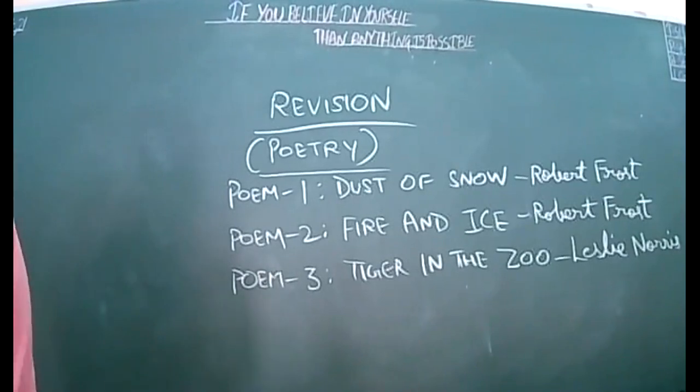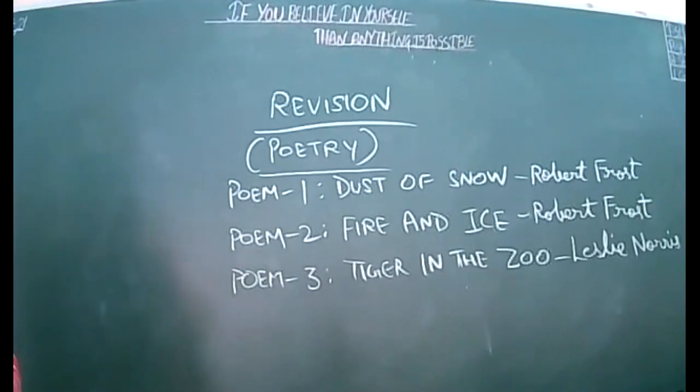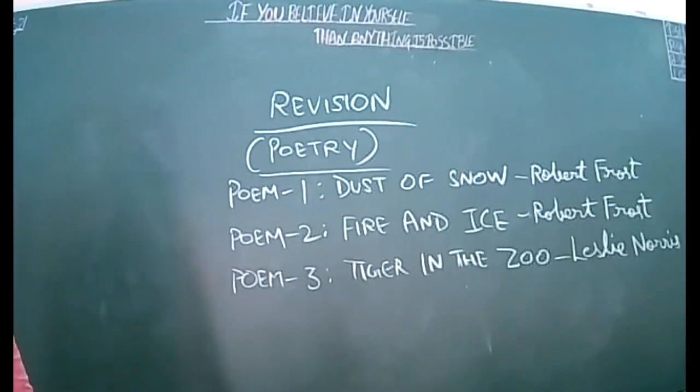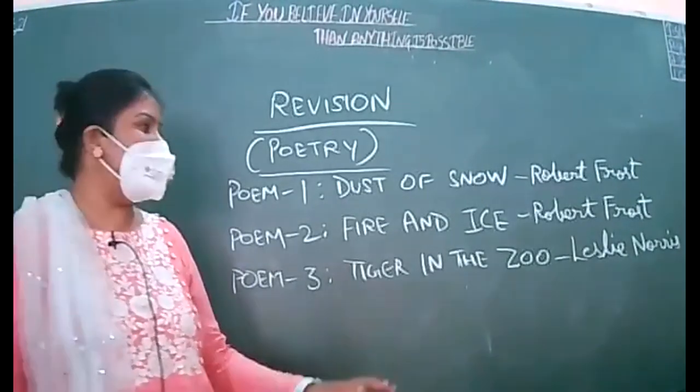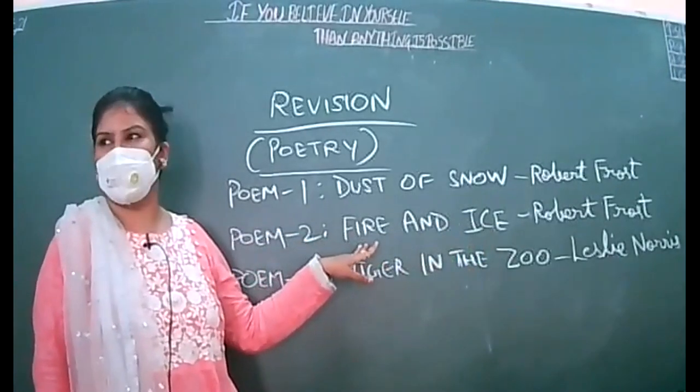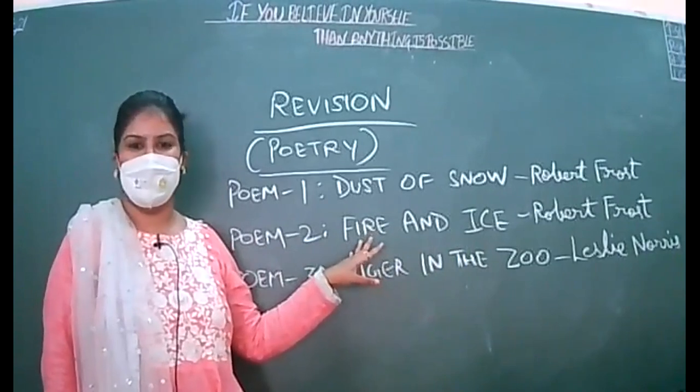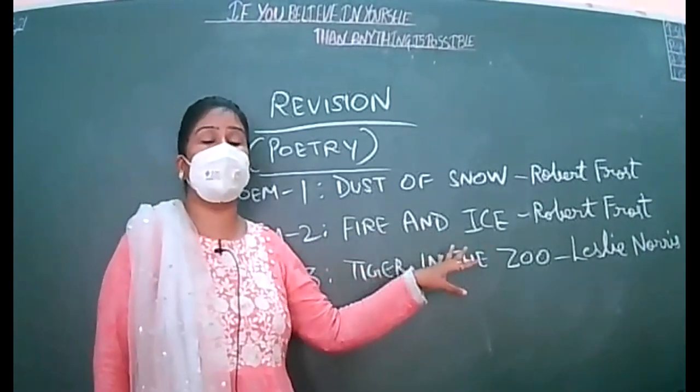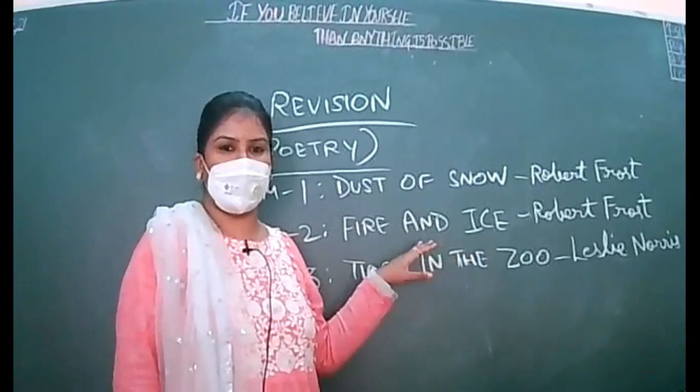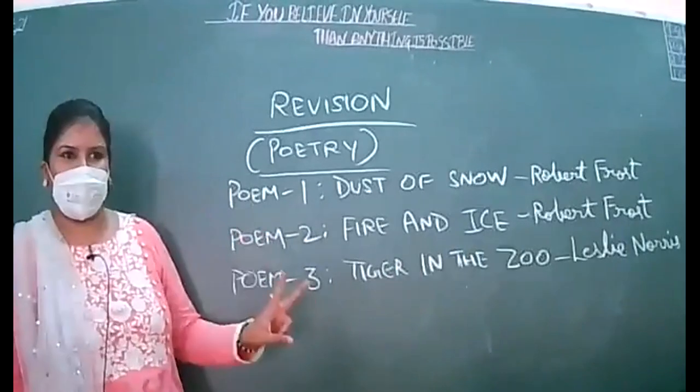Next is the second poem, Fire and Ice. It is also written by American poet Robert Frost. Fire and ice—let me tell you, these two words are symbols. Fire is symbolic of passion; when you are full of passion, you can do anything to achieve success in life. Ice is symbolic of insensitive attitude when you do not bother about what is happening around you.